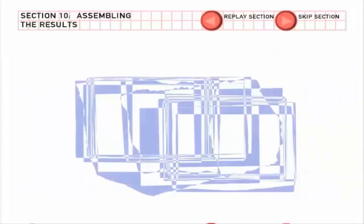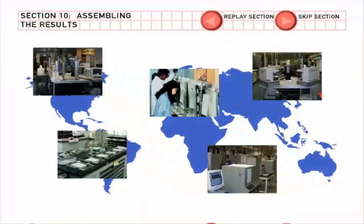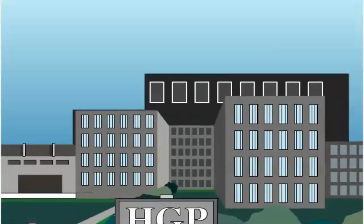To sequence the human genome, scientists will ultimately run more than 50 million reactions. Some 2,000 scientists in more than two dozen labs around the world have worked toward the goal.